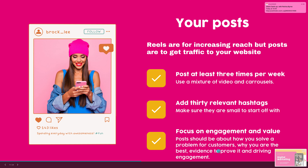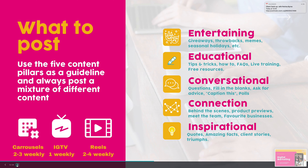Focus on engagement and value. Your posts should be about how you solve a problem for customers, why you are the best, evidence to prove it, and driving engagement. Make sure you're asking questions — for example, if you had a football shirt business you could ask 'Do you think we're going to win the league? Comment with your best team below.' Or for dog grooming: 'What's your favorite dog cut?' — give them options in the carousel. For a cake business: 'What's your favorite cake — carrot or chocolate? Let us know in the comments.'